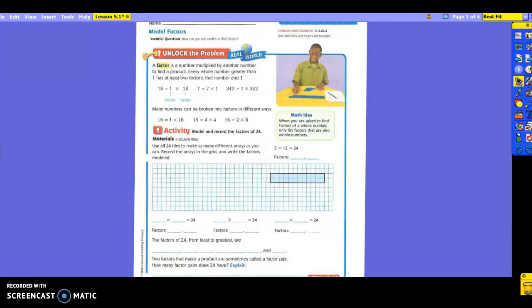Every whole number greater than one has at least two factors, that number and one. Take a look at their examples. They have 1 times 18 equals 18. So the factors would be 1 and 18. Does everybody see that?